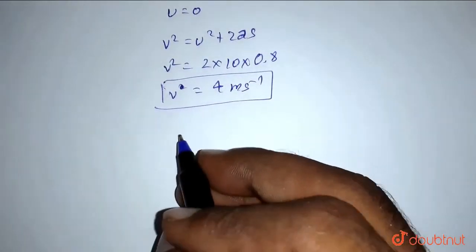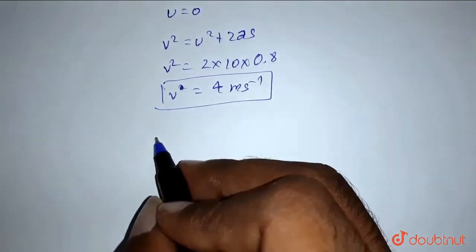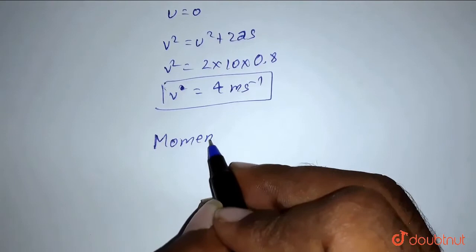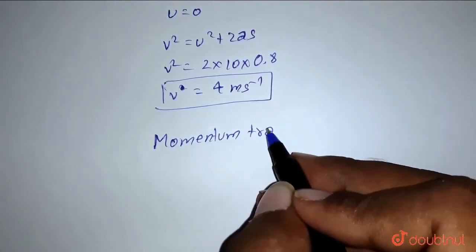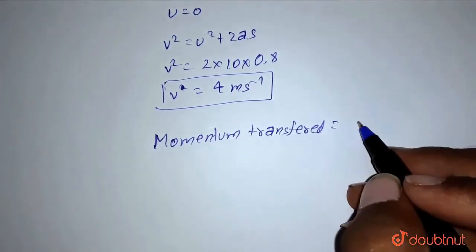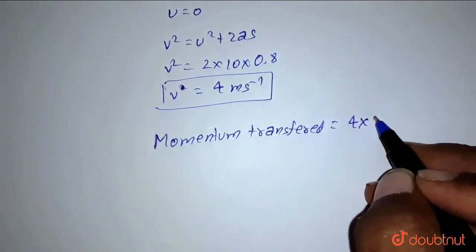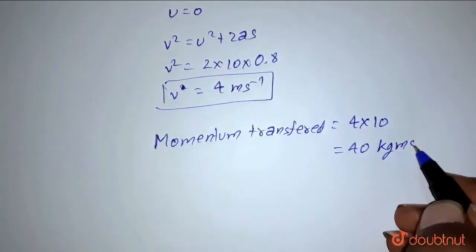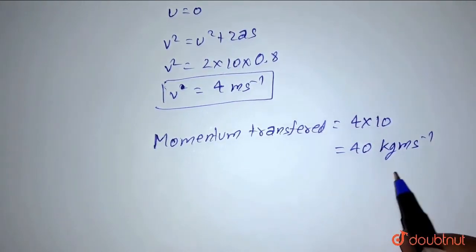And the momentum at which it will hit the floor will be momentum transferred is equals to 4 into 10, that is 40 kilogram meter per second. This is the momentum that will be transferred to the floor.